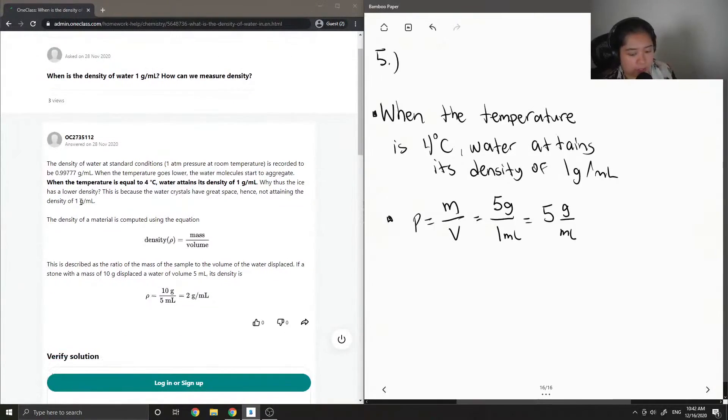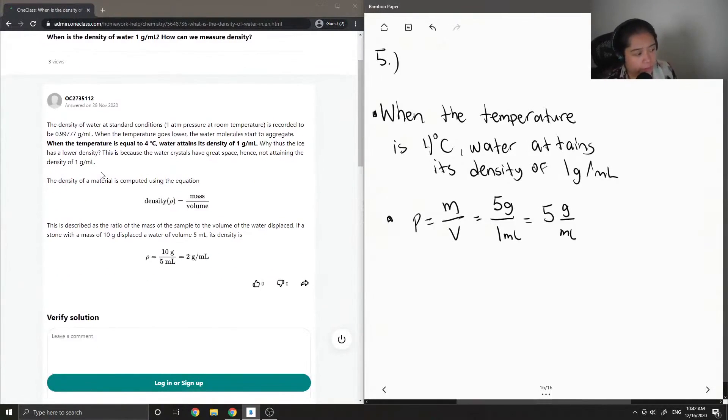Okay, so let's see what the junior tutor said. The density of water at standard conditions, one atm pressure at room temp, is recorded to be 0.99777 grams per mill.